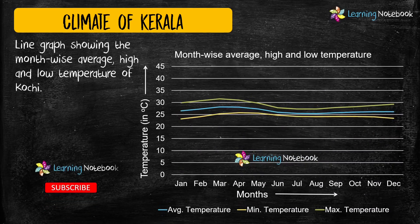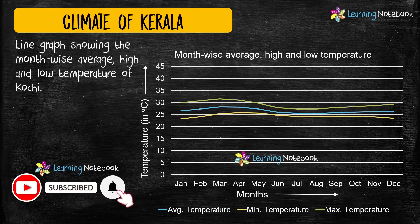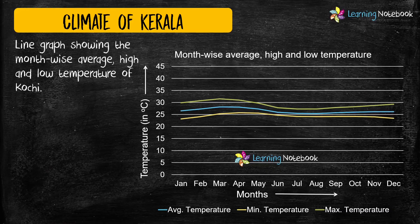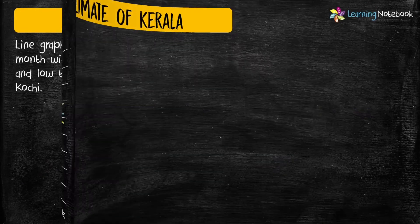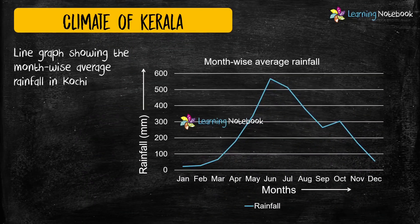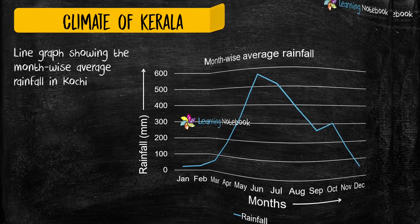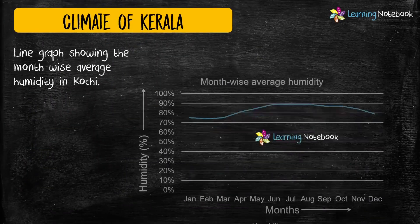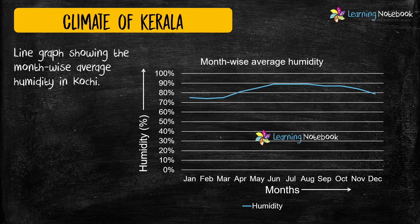You can take help of a line graph to show month-wise average high and low temperature of Kochi. Then, you can represent month-wise average rainfall of Kochi as shown here. In the same way, you can depict month-wise average humidity in Kochi using a line graph.